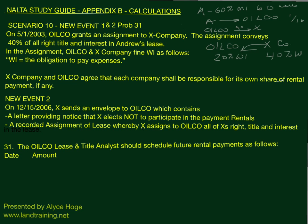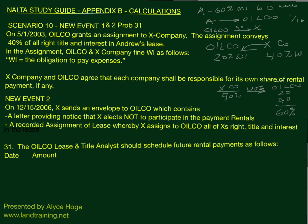So now X is assigning back to Oilco. X company had its 40% interest and is now conveying it back to Oilco. Oilco owned 20% and is now getting the 40%, so once again they own the full 60% working interest. The question for number 31 is: the Oilco lease and title analyst should schedule future rental payments as follows.